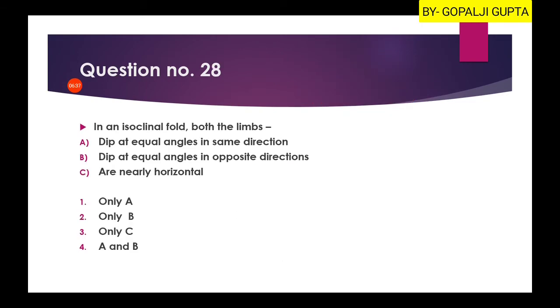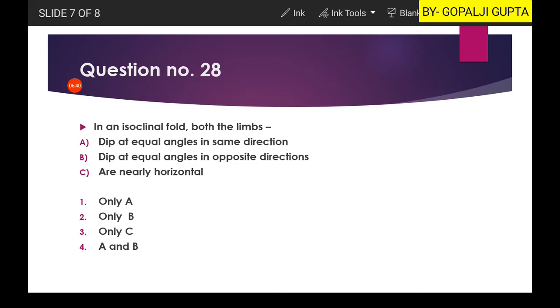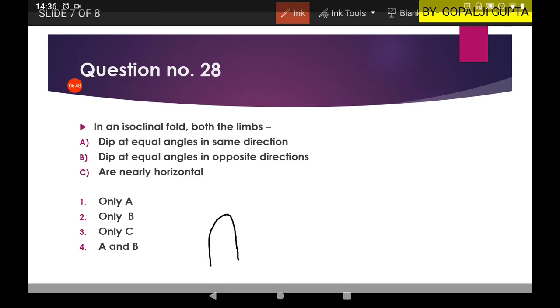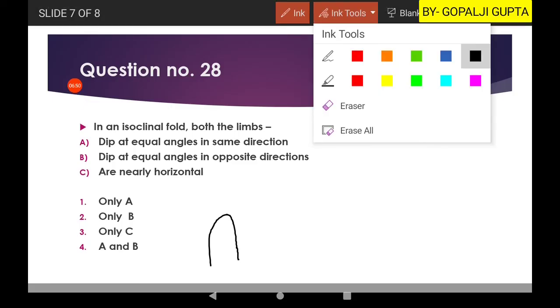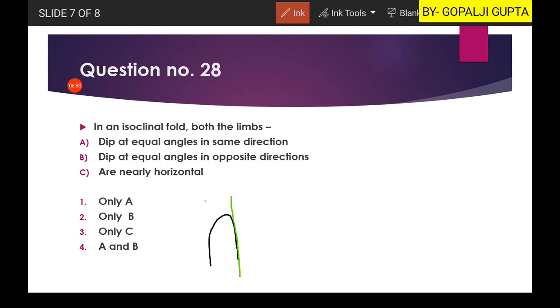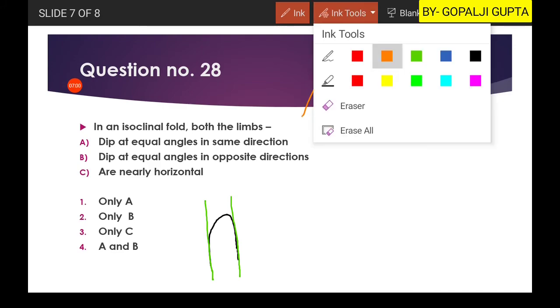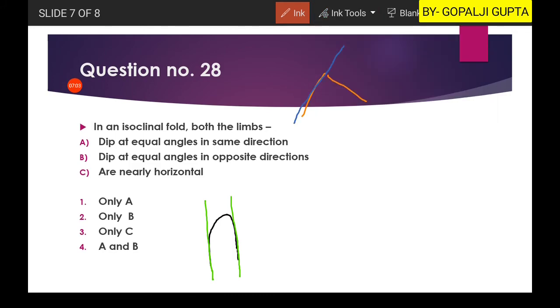Next question: in an isoclinal fold both limbs are? And here you have three options. Now let me draw one isoclinal fold. Isoclinal fold looks something like this where the inter-limb angle is zero. So if you don't know about inter-limb angle, you can see that suppose this is a fold and if we draw lines along the limbs, then it will make an angle which is known as ILA or inter-limb angle. In the case of isoclinal fold, inter-limb angle is zero.